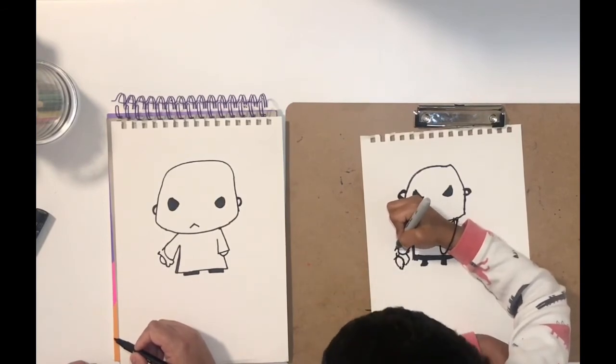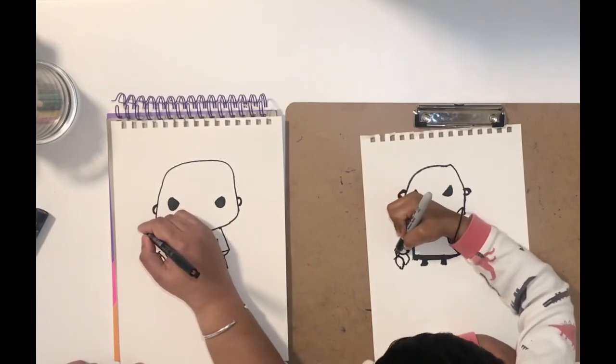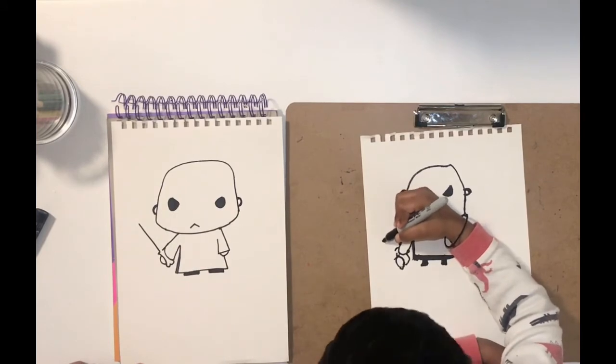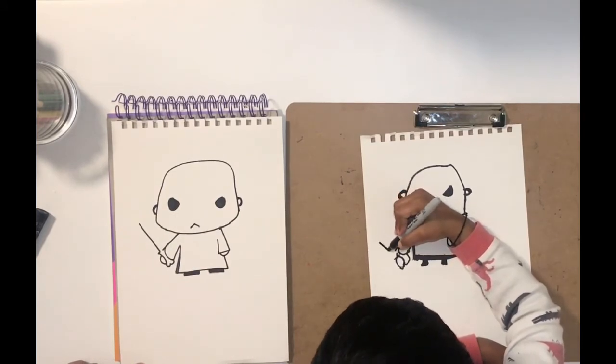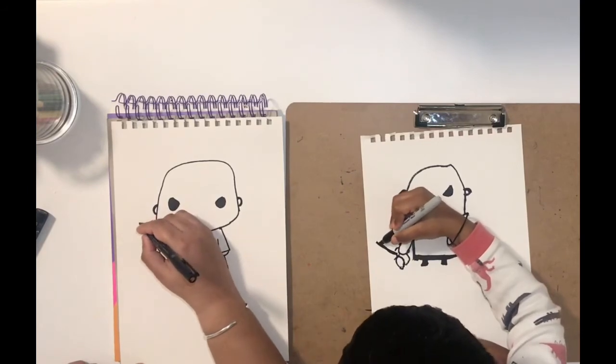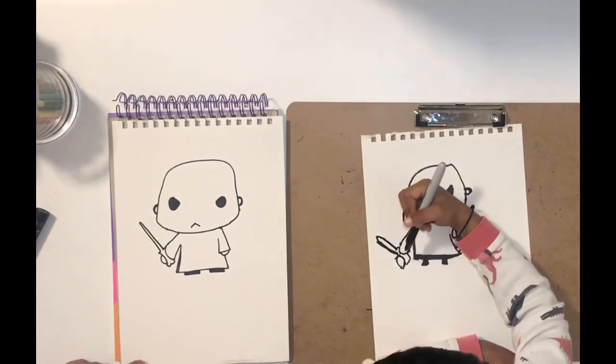Now we're going to draw his wand. We're going to start at the top and make sure you merge it with the line. Make sure then you have a pointy edge on the top, and then again bring it down with a line. That's his wand.